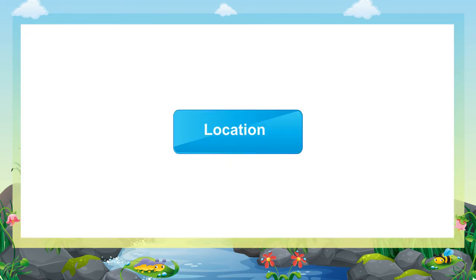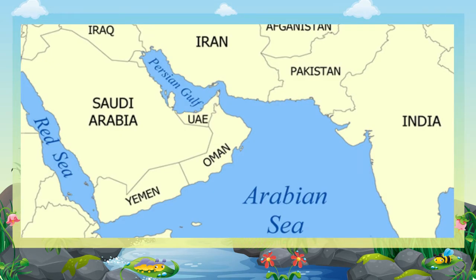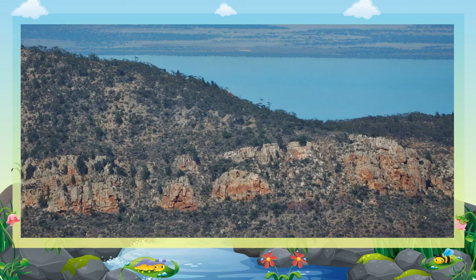Location: Saudi Arabia occupies most of the Arabian Peninsula and is the largest Arab country of the Middle East. The Tropic of Cancer passes through this region. On the north, it is bordered by Jordan and Iraq. To the northeast, Qatar, Bahrain, and the United Arab Emirates are to its east, and Yemen is on the south.